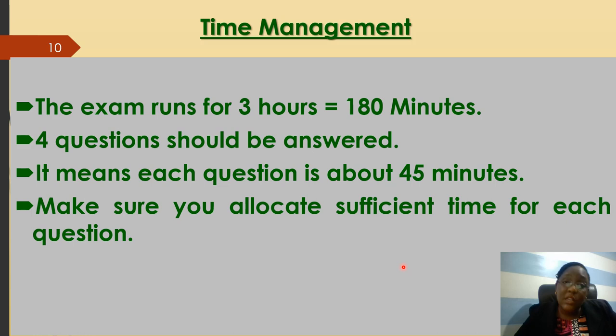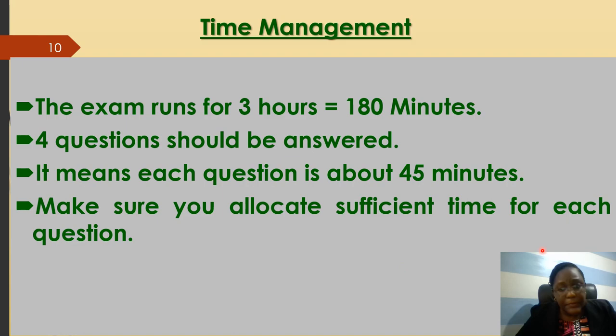Allocate 45 minutes to question one, and when the time is up move to question two whether you finished or not — you need marks from each question for a well-rounded score. It's useless to get 20 in question one and zero in question two. Make sure you balance your exam timing, otherwise you lose out on questions that could have been easier and you might have scored much better.